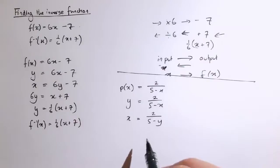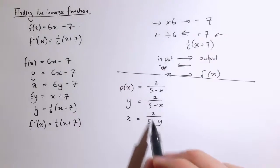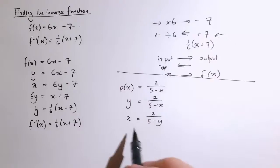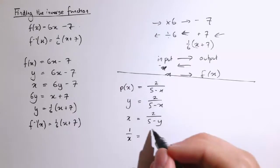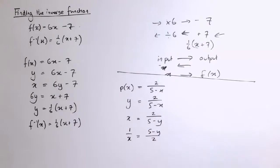Now we've just got to rearrange this to make y the subject. I think the easiest thing to do here, you could multiply by 5 minus y, but I'm going to make it a little bit easier by taking the reciprocal of each side.